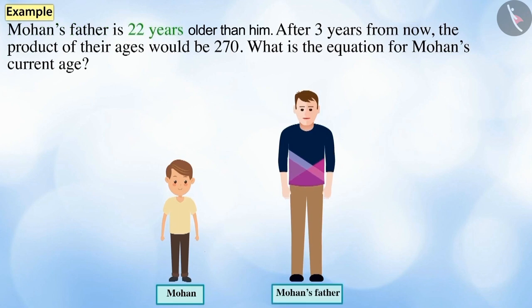Mohan's father is 22 years elder to him. After 3 years from now, the product of their ages would be 270. What would be the equation for Mohan's current age?